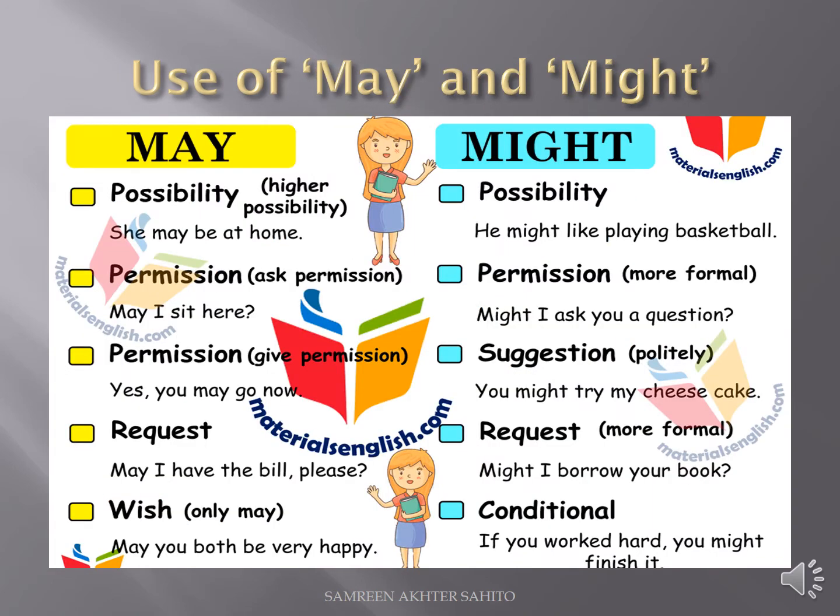Now the second use — may and might. Where we use may and where we use might. These two words are same in meaning but their usage is different. 'May' is used for possibility — when you have a higher possibility, you use may. For example: 'She may be at home.'